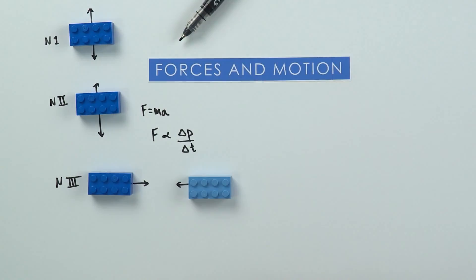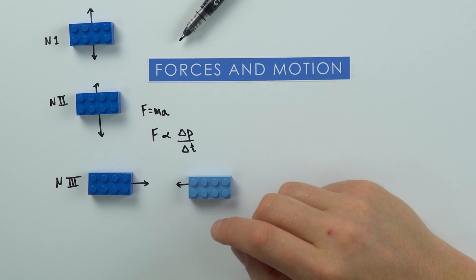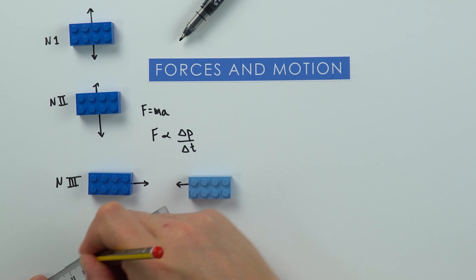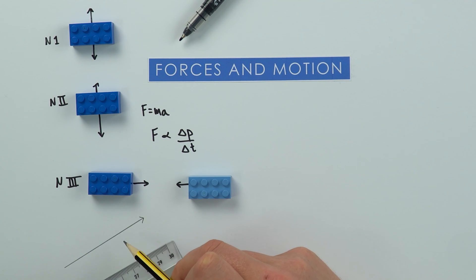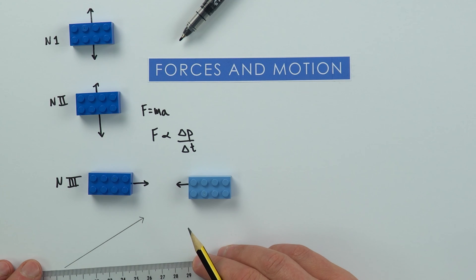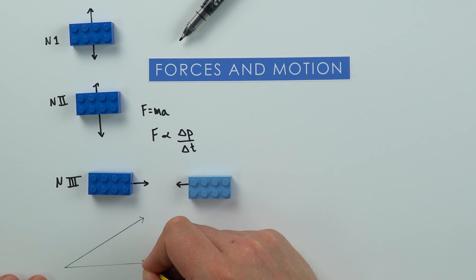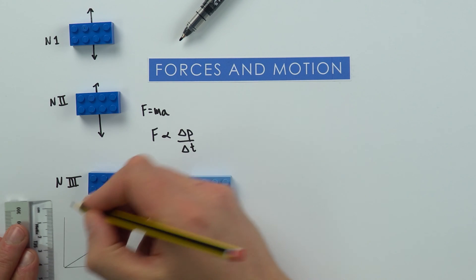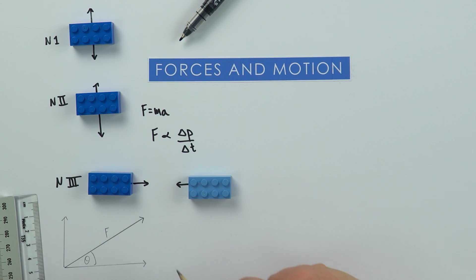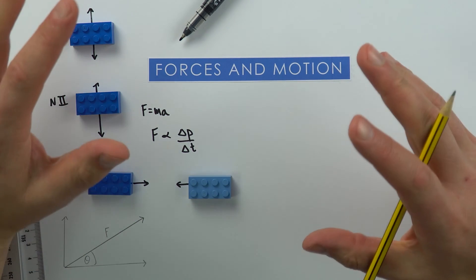Force is a vector quantity — it doesn't just have a size, it also has a direction. We represent forces with arrows, where the length is proportional to the size of the force. We can resolve a force into its horizontal and vertical components. If a force acts at angle theta, we look at F cos theta or F sin theta, which is why trigonometry is so important. At A-level, many forces act at angles rather than simply up, down, left, or right.